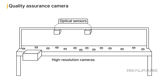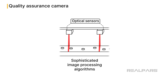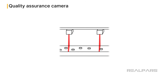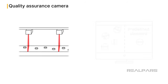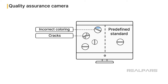High-resolution cameras equipped with infrared capabilities are used to detect inconsistencies that are not visible to the naked eye. Advanced image processing algorithms analyze each pill, comparing them against a predefined standard to identify anomalies. Anomalies can range from cracks, incorrect coloring, size discrepancies, or even foreign particles.